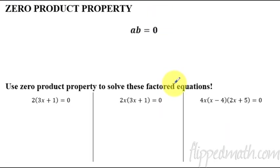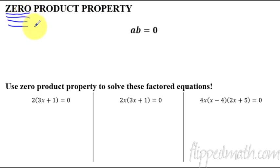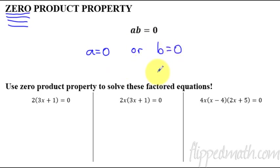Now we're on to the zero product property — incredibly important. Underline the word zero, because this only works when an equation equals zero. The zero product property states: if a times b equals zero, then either a equals zero or b equals zero. That's the only way two things multiplied together can give zero. It's something you've known since you first started multiplying — anything times zero is zero.